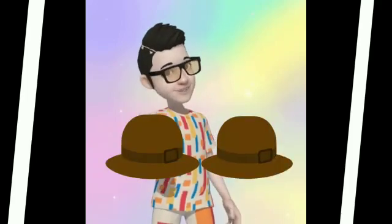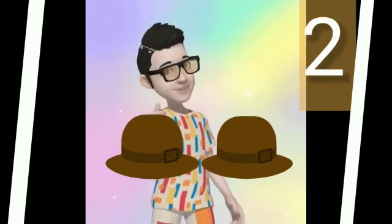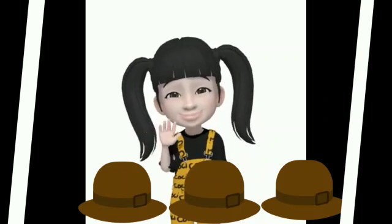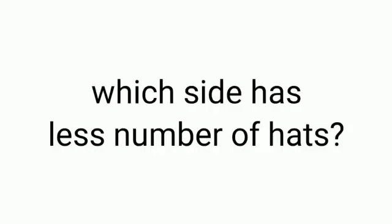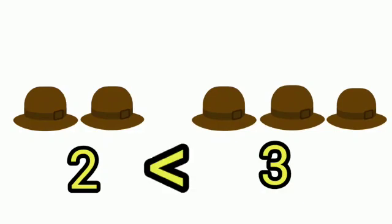This is Cookie's father. He has two hats. This is Cookie. She has three hats. Which side has less number of hats? In the left side there are two hats, and in the right side there are three hats. Two is less than three.